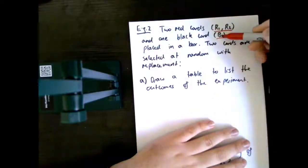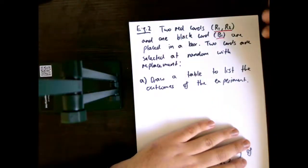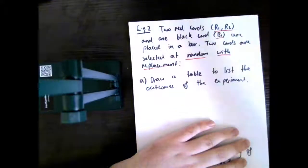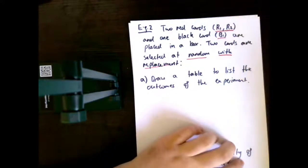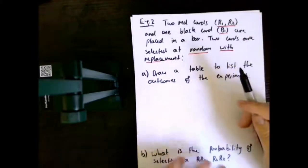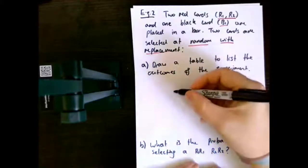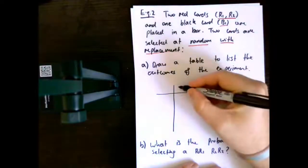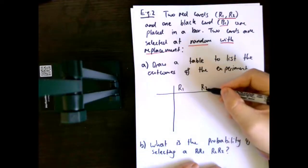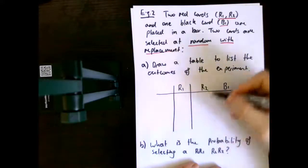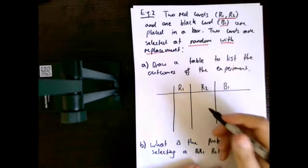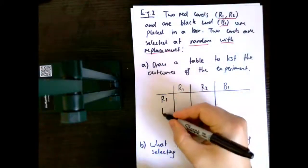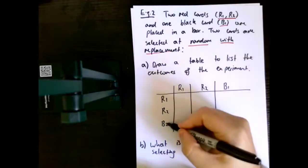And this other one down here, we also have one black card, which is also distinct. They're placed in a box so we can't see what's happening, and then two cards are selected at random — so that means we're talking about probability with replacement. Once they're pulled out, they're put back in. So now we're going to draw a table to list the outcomes of the experiment, exactly like what we did before. On my first draw, I have three separate outcomes: I can achieve a red one, I can achieve a red two, and I can also achieve a black one.